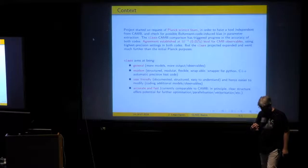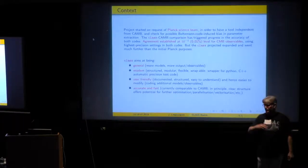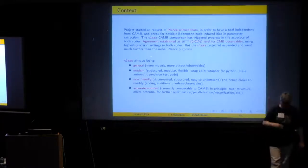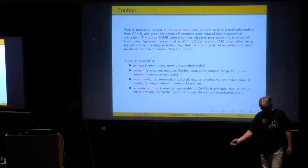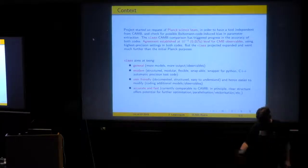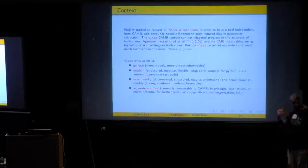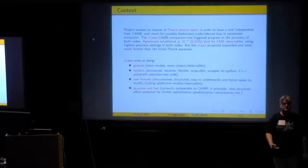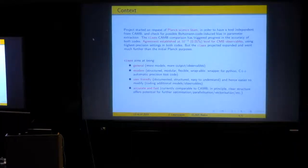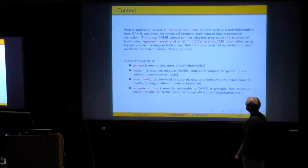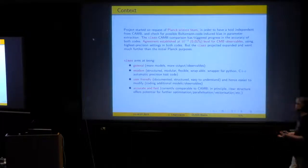And then you have the community of theoretical cosmology, where people want to implement new features. I don't know, a new dark matter species, a new approximation, a new model of modified gravity, whatever. Or just a new observable also. And then when people arrive to the stage of modifying the code, it seems that CLASS becomes very popular and very much used in this case. And of course, we wanted to have a code which would be accurate and fast as its competitors. So the speed is roughly the same as CAMB. It's the same order of magnitude.